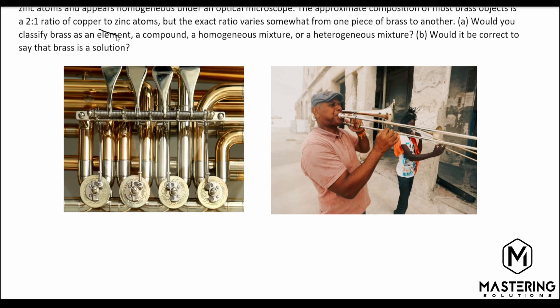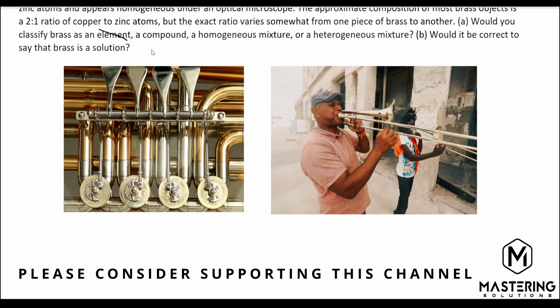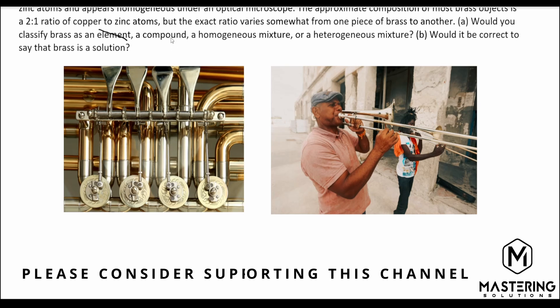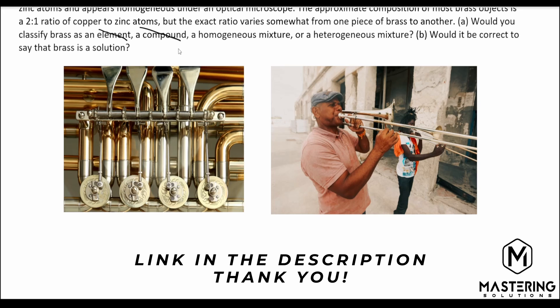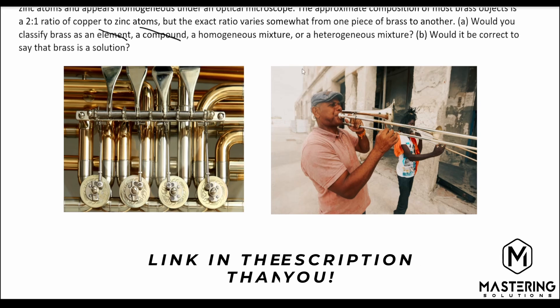An element is only one kind of atom, which can be bound to itself or individual, but there's only one kind. A compound is multiple atoms bound together into little molecules. Mixtures, however, are a combination of more than one kind of atom or molecule, but they're not bound into individual discrete particles. So we can cross out element and compound, because the atoms are jumbled up together — so we know it's a mixture.